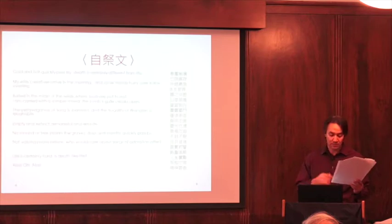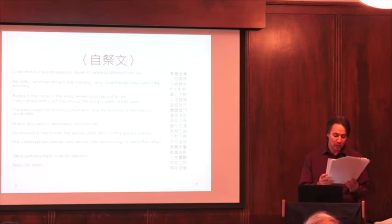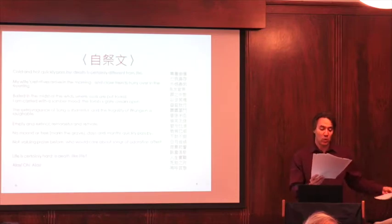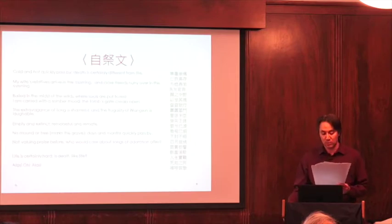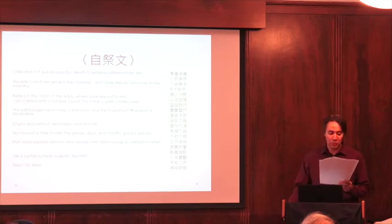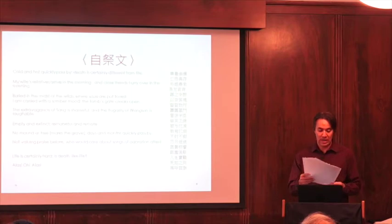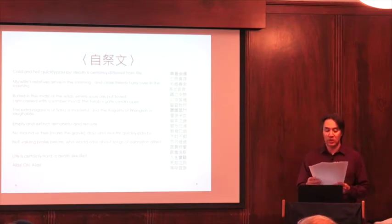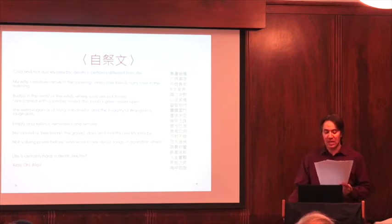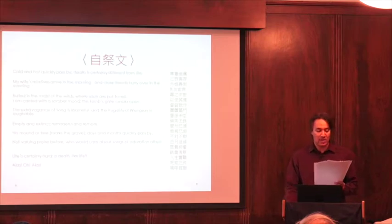Transformation in this sense is so inescapable that not only is death certain, but life itself is a struggle in the midst of incessant change. So while Tao has his moments of embracing the transformations of the world, he also has his moments of cynicism. As a matter of fact, even in places where Tao endorses these hua, he often goes on to highlight its poignant aspects. For instance, in the elegy Tao writes for himself, he describes himself as someone who took joy in heaven and accepted his lot until the end of his days. Shortly after this line, Tao states: I have now been transformed and can be without regret. Yet despite these statements, Tao closes his elegy as follows: Cold and hot quickly pass by. Death is certainly different from life. My wife's relatives arrive in the morning and close friends hurry over in the evening. Buried in the midst of the wilds where souls are put to rest, I am carried with a somber mood. The tomb's gate creaks open. The extravagance of Song is shameful and the frugality of Wang Sun is laughable. Empty and extinct, remorseful and remote. No mound or tree marks the grave. Days and months quickly pass by. Not valuing praise before, who would care about songs of adoration after? Life is certainly hard. Is death like life? Alas, oh, alas!